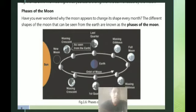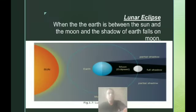When the moon appears to increase its shape, it is known as the waxing period. When it appears to decrease its shape, it is known as the waning period. Let us discuss eclipses.